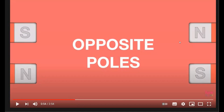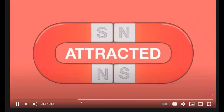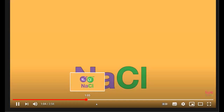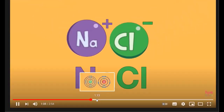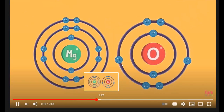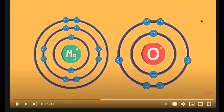Ionic bonding is a kind of electrostatic attraction that exists between two oppositely charged ions. Another example is magnesium oxide. Magnesium can donate its two electrons and achieve the octet state, and oxygen, by gaining those two electrons, will also attain a stable octet state. So magnesium oxide, with formula MgO, is classified as an ionic compound.